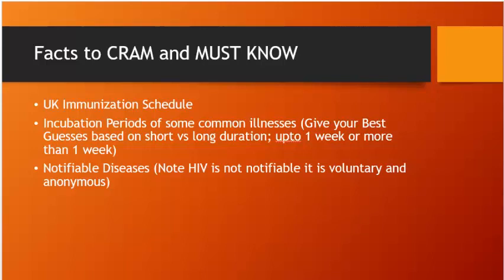Certain facts must be memorised before the exam: UK immunization schedule, incubation periods of common illnesses (divide into short and long duration — HUS incubation 3–5 days), and notifiable diseases. Note that HIV is not notifiable — it is voluntary and anonymous. Other diseases like chickenpox are notifiable.